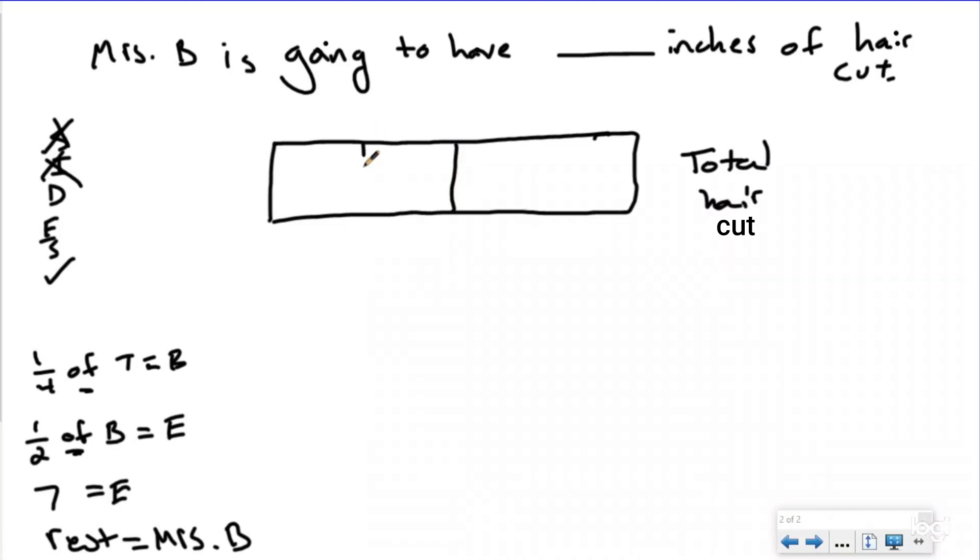I also know that whatever Mr. Butler has, half of it is what Elijah has. So if I split this into half, that would be what Elijah has. I know this one is 1/4 Mr. Butler. I'm gonna take this 1/4 and split it into half and label it as Elijah, because Elijah had 1/2 as much as Mr. Butler cut.